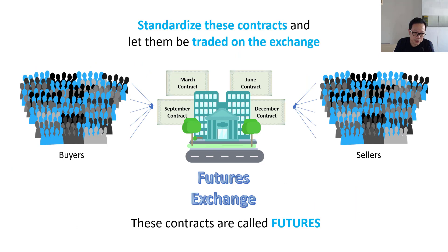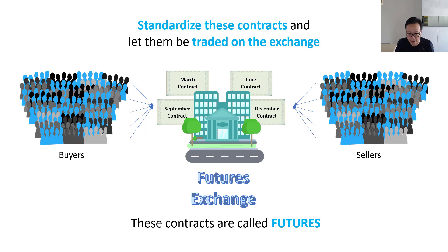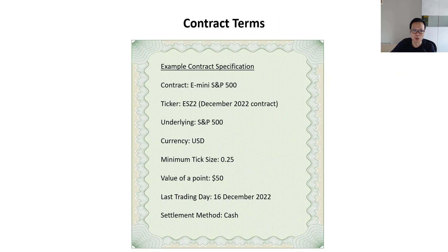So how does all this relate to futures? The example I've given is a private one-to-one arrangement or agreement between specific counterparties. If we can extend this by standardizing such contracts and getting them traded on an exchange, then potentially a lot more people can participate. And if that is the case, the contract will trade just like stocks — it can be transferred from person to person by just buying and selling. These standardized contracts trading on an exchange are your futures contracts. A futures contract will have its own specification and terms, and depending on the asset class the futures is based on, there can be differences from one contract to another.